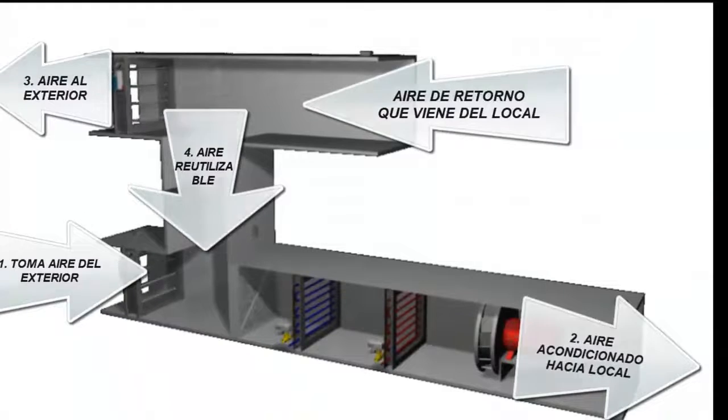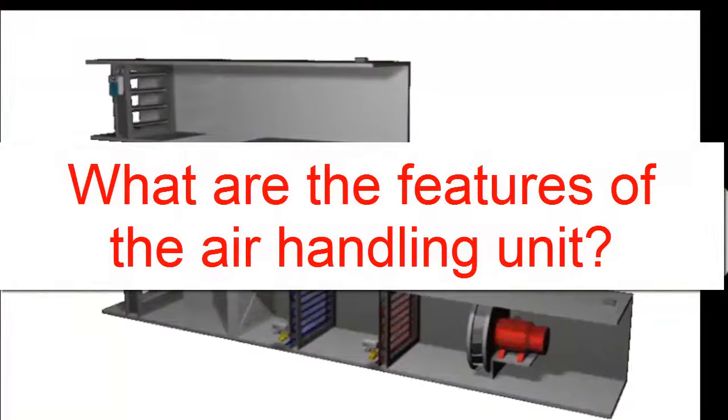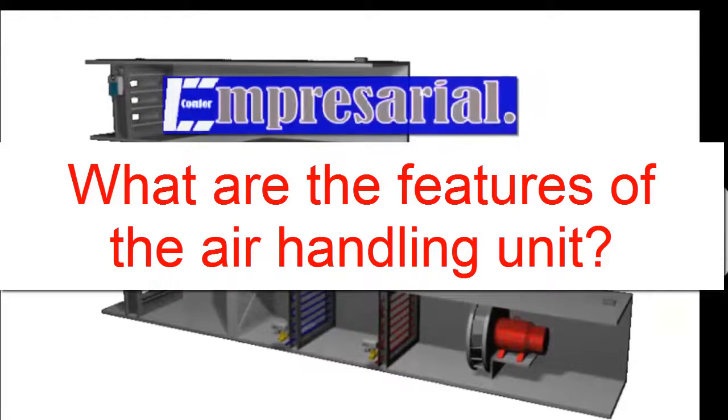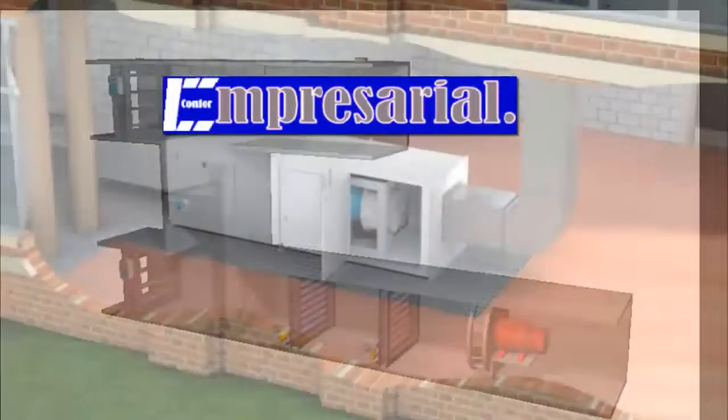What are the characteristics of a typical air handling unit? We list them below. 1. In a basic model, there are two ducts, one for supply and one for return air.